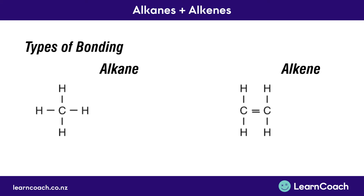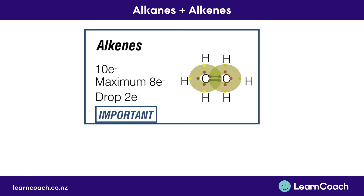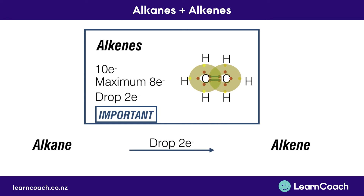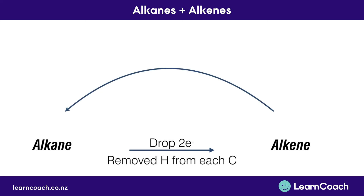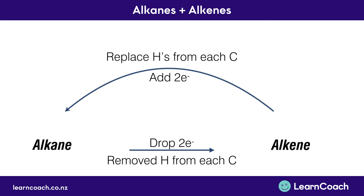Now we'll look at the differences between the types of bonding. An alkane is what we call a saturated bond, whereas an alkene is unsaturated. This is because if we break that carbon-to-carbon double bond, we now have two free spots where we can add other chains of hydrocarbons — represented by R. You could add a methyl or an alcohol there. Going from an alkane to an alkene, we needed to drop two electrons, so we removed an H from each carbon. Going back the other way, from an alkene to an alkane — unsaturated to saturated — we need to add two electrons by replacing the hydrogens we took off from each carbon. This is also important to know because examiners will ask you about this process, especially when we come to polymerization, covered in another video.